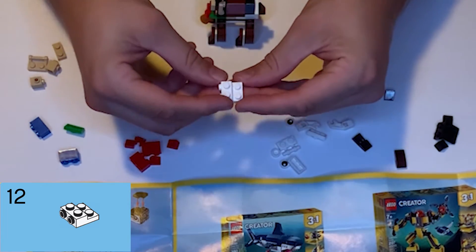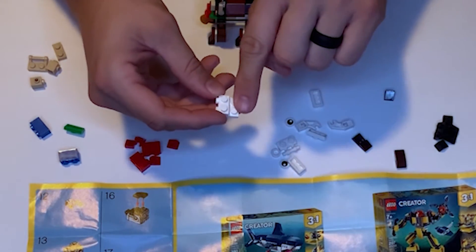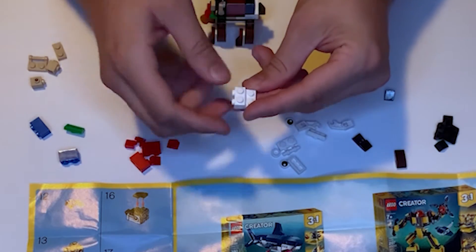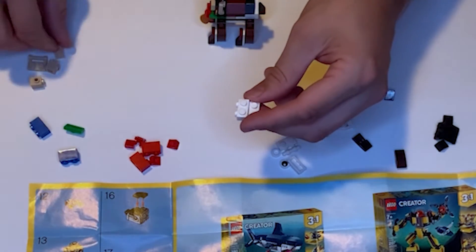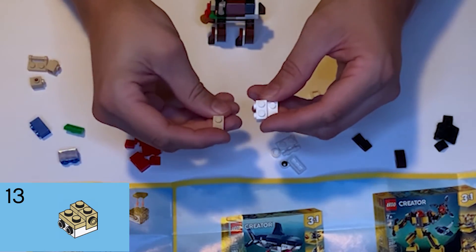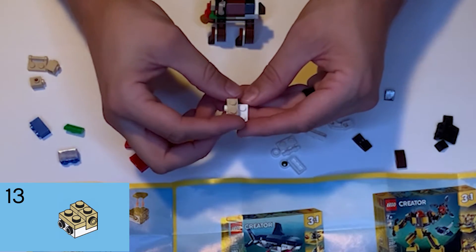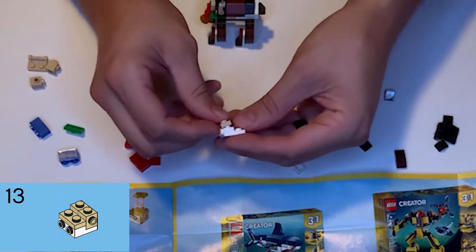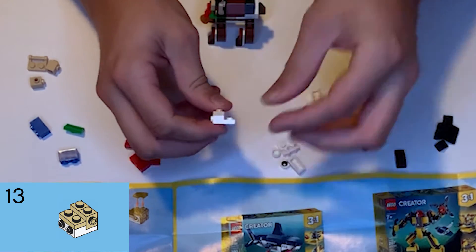We're gonna put a tan 1x2 flat right on the upper portion of that white piece, then we're gonna take these two tan cubes. They have a stud facing off the side.